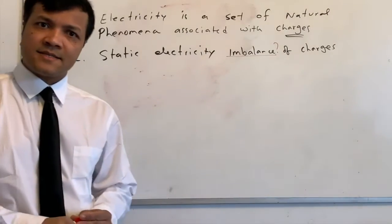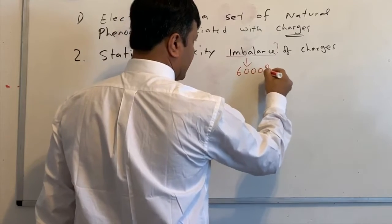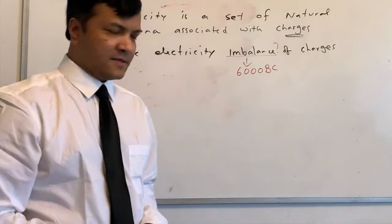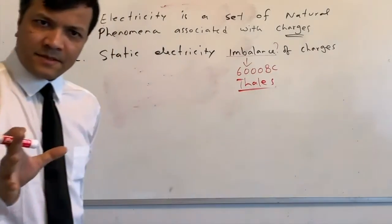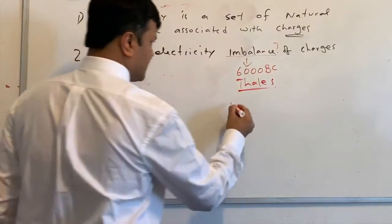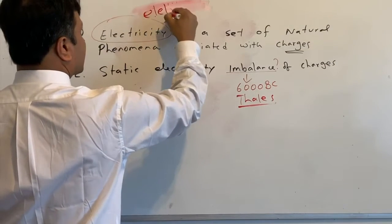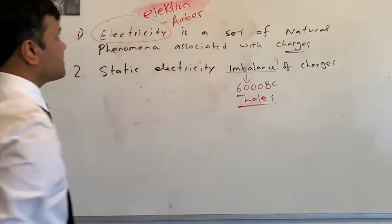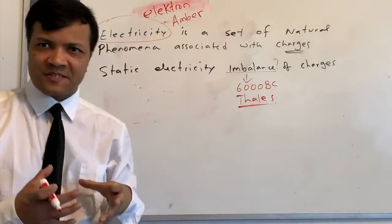That takes us all the way back to 6000 BC. We need to know exactly how to create the imbalance of charges. The ancient Greeks used amber - in fact, electricity came from the word 'electron,' which means amber.